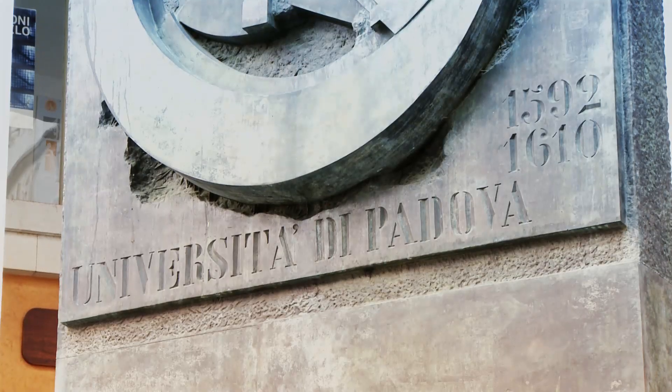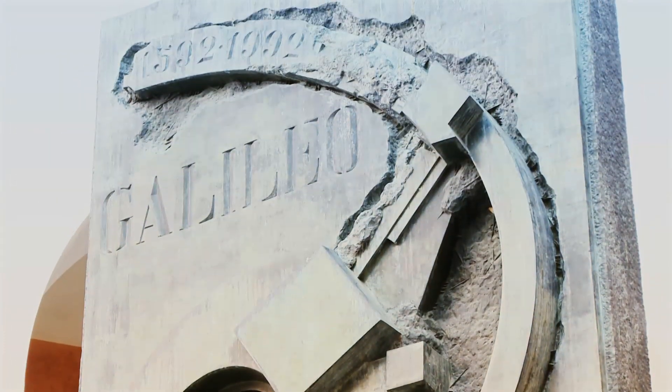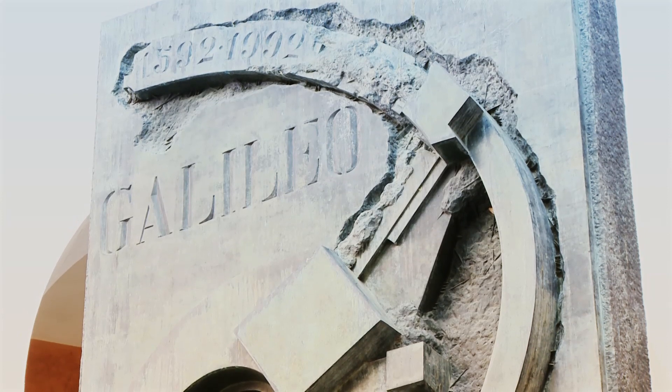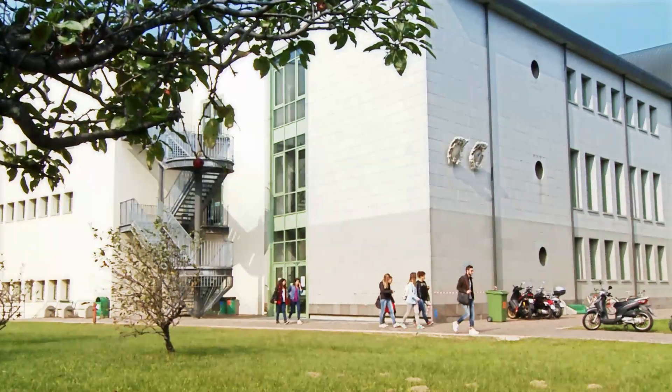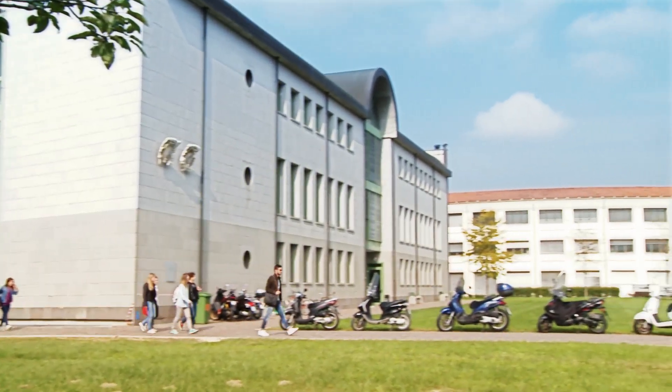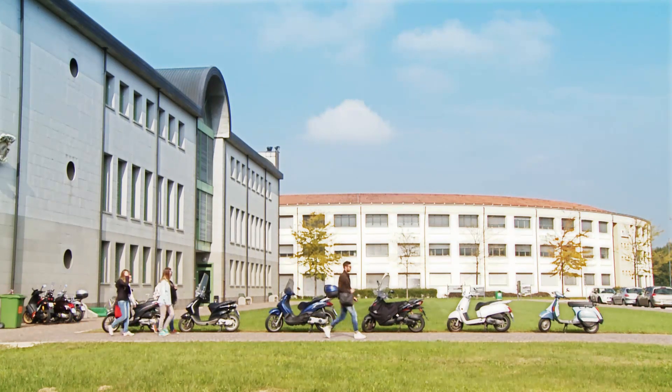The University of Padova is the second oldest in Italy. We had Galileo in our university for his probably most productive scientific life. We're now located outside the city of Padova in the agriculture campus called Agripolis and our lab is within the veterinary school.